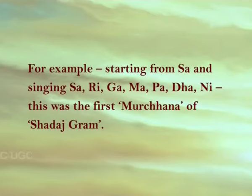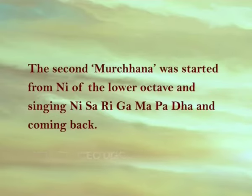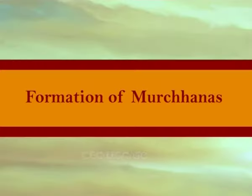In the ancient text, for example, starting from sa and singing sa re ga ma pa dha ni was the first moochna of Shadaj gram. The second moochna was started from ni of the lower octave and singing ni sa re ga ma pa dha ni and coming back. Similarly, considering each note of Shadaj gram as the fundamental or key note and singing arohu and avrohu from there produced seven moochnas of Shadaj gram.